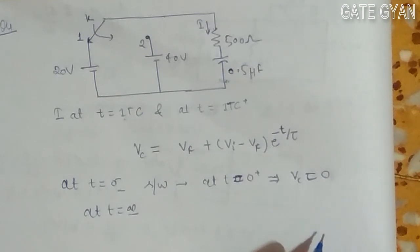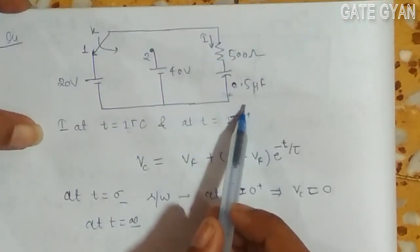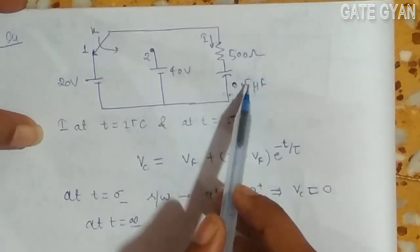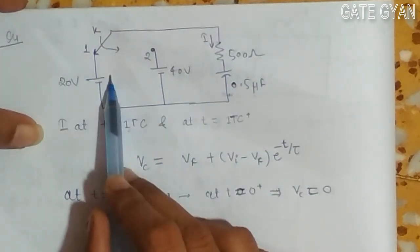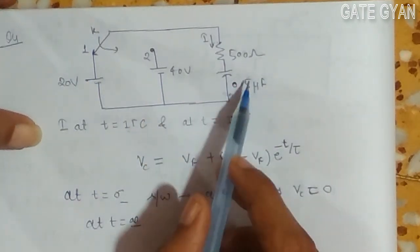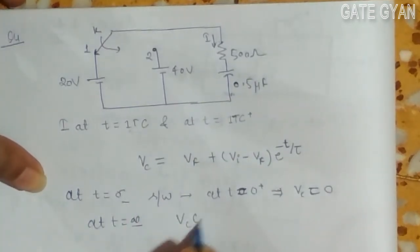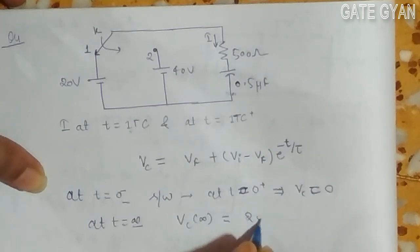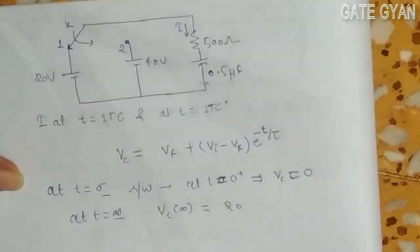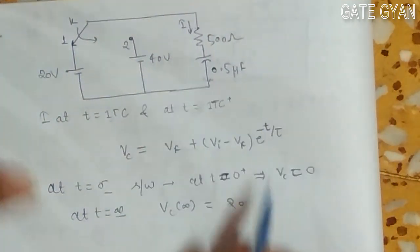And at t equals infinity, this capacitor will get open circuited. So this whole 20 volt will appear across this capacitor. My vc will become 20 volt.